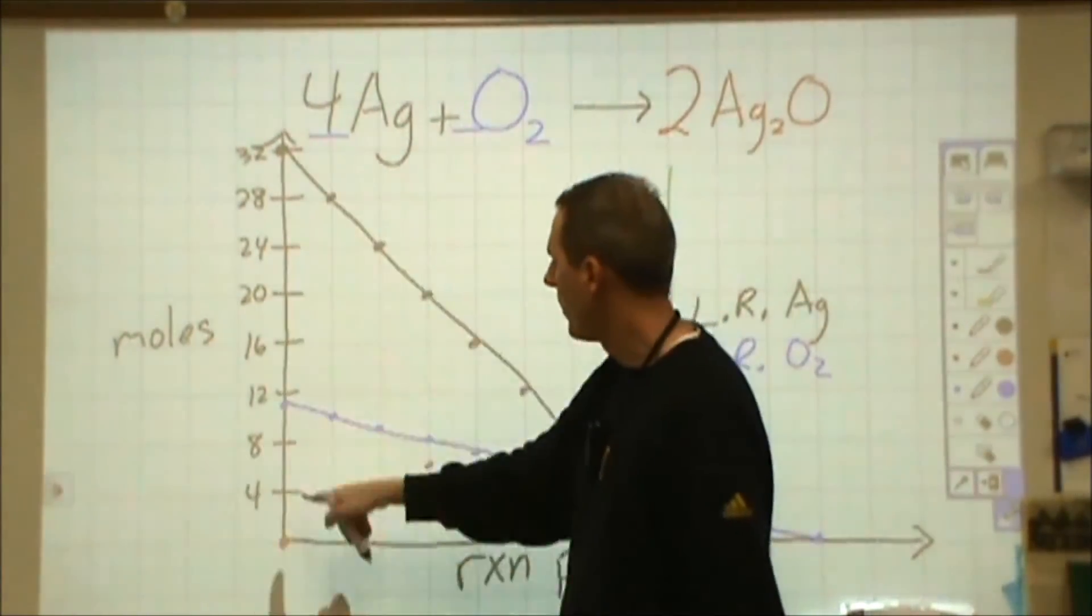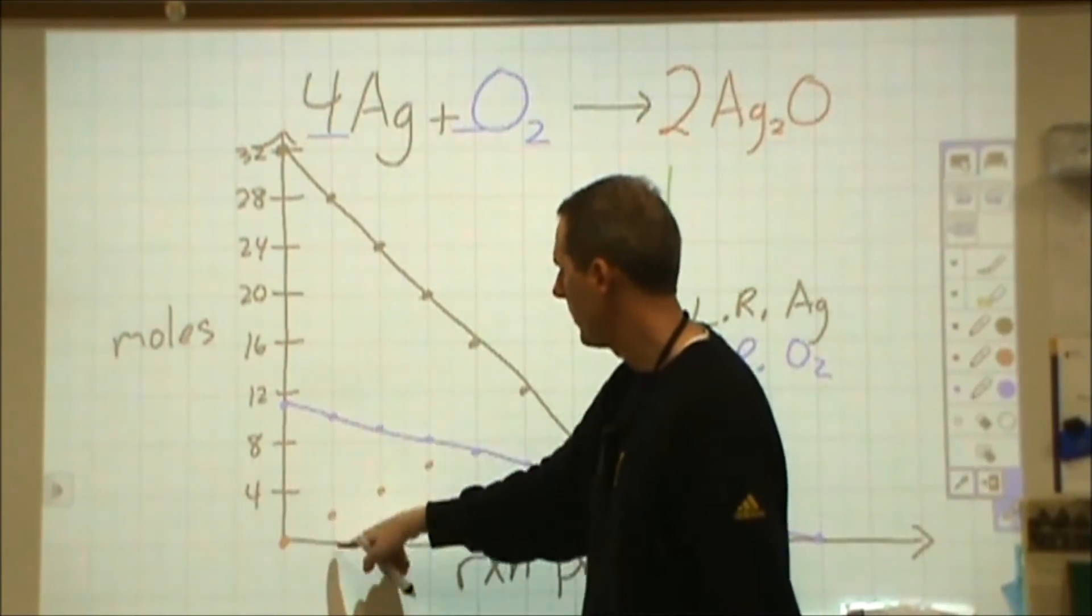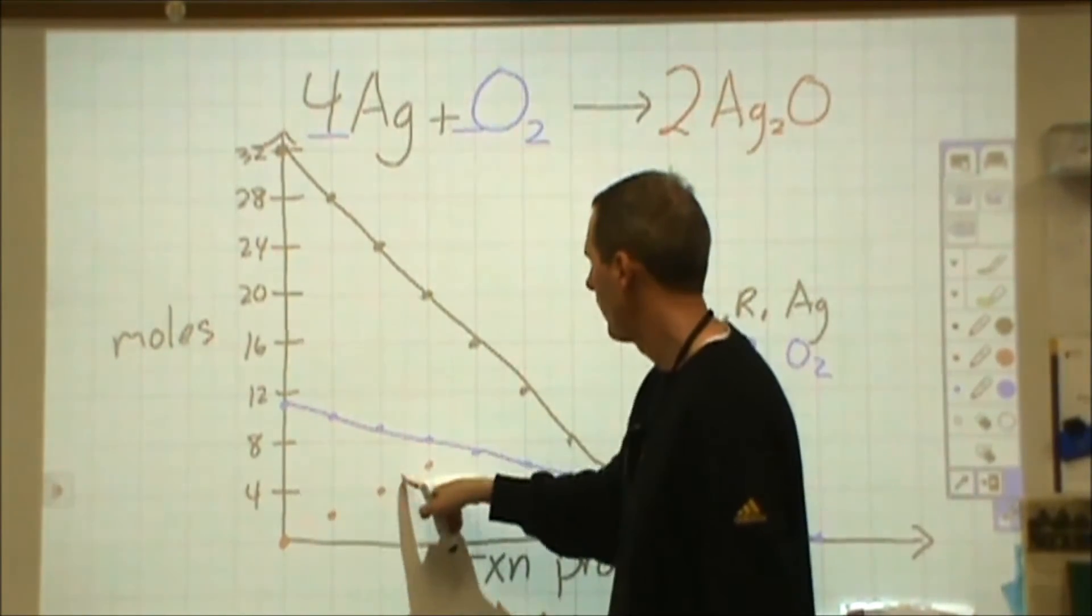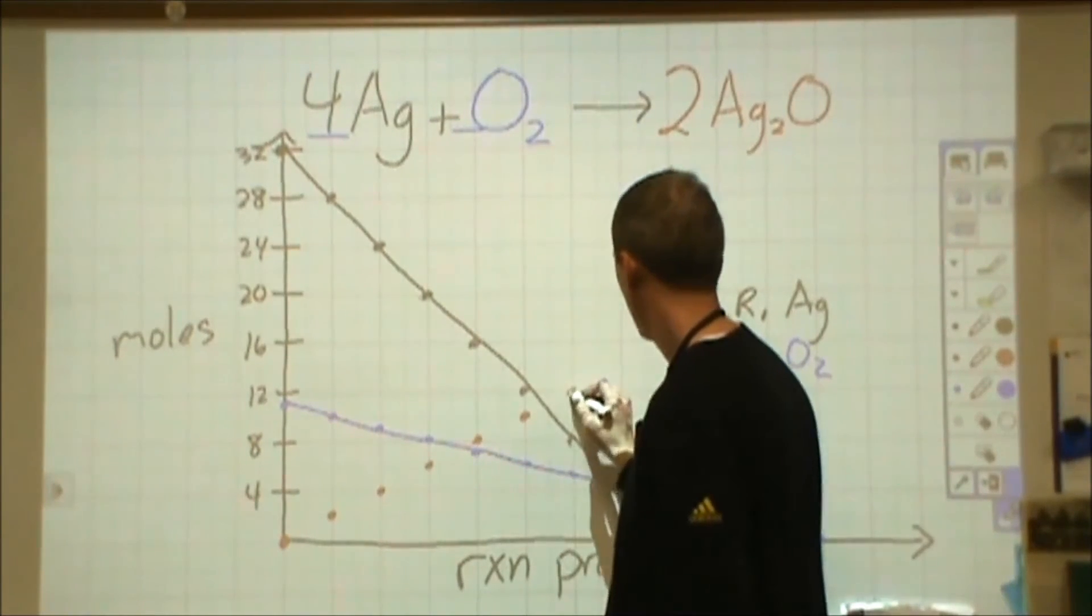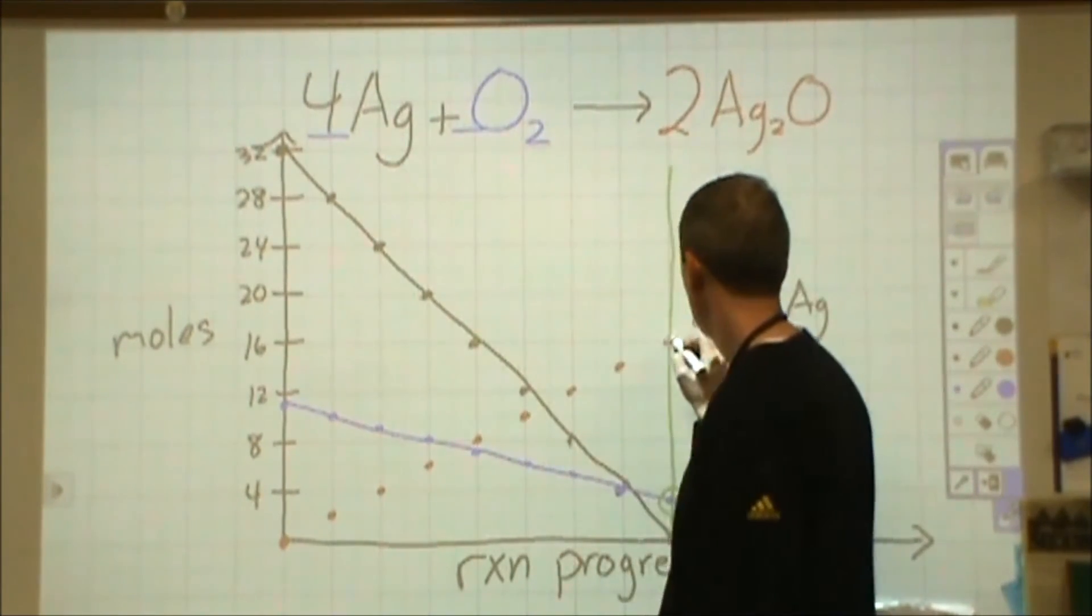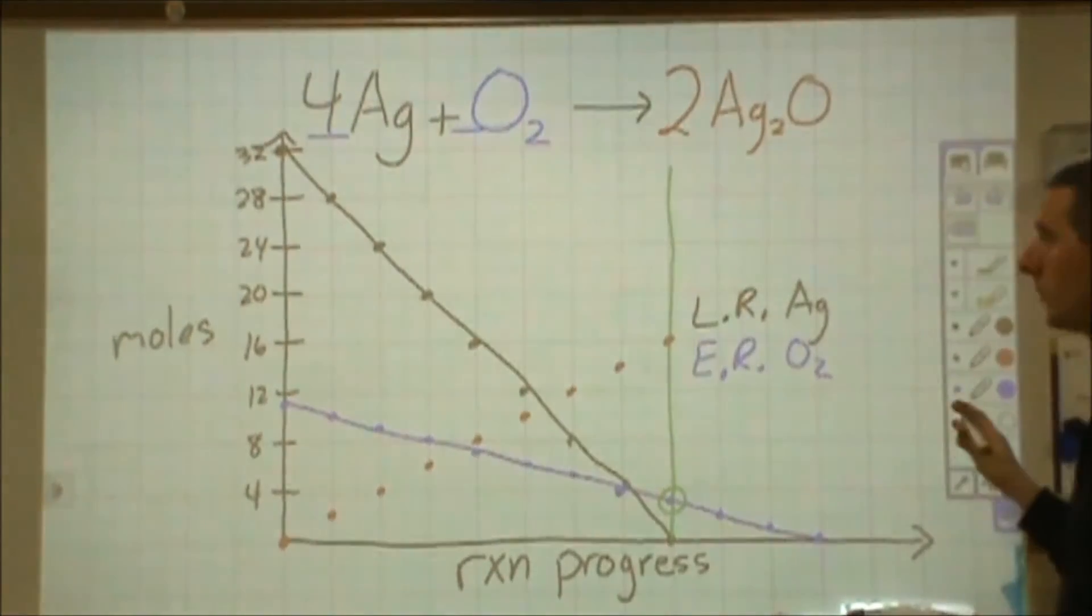So as this goes down four, this goes up two. As this goes down one, this goes up two. So we go two, four, six, eight, ten, twelve, fourteen, sixteen at this time.